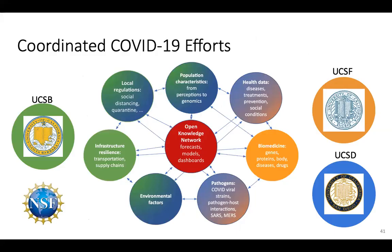When we applied for this RAPID grant, we had collaborators on the Open Knowledge Network from the NSF. We had collaborators from UC Santa Barbara in green, UCSF in orange, and us in blue. We divide it up in particular areas. We are focusing on population characteristics, health data, pathogen information, and environmental information, whereas our collaborators from UC Santa Barbara focus on transportation and supply chain, and UCSF focuses on biomedicine.